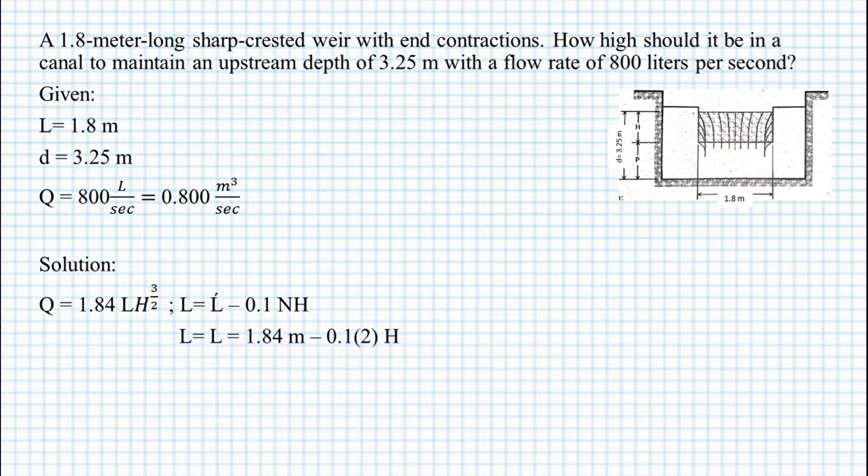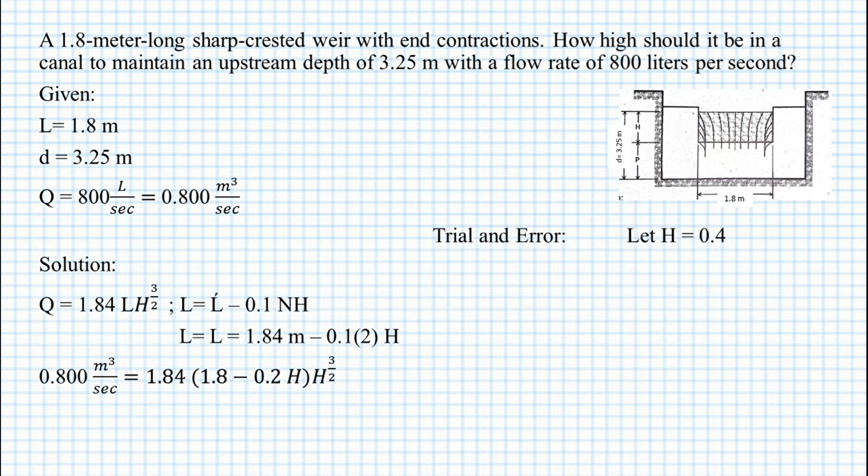We have 0.800 cubic meters per second is equal to 1.84 multiplied by (1.8 minus 0.2H) multiplied by H raised to the power of 3/2. Using a trial and error method,